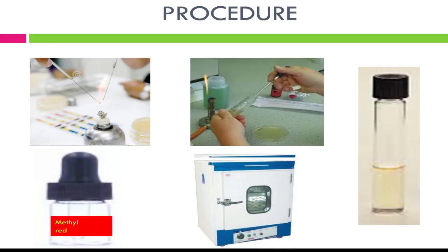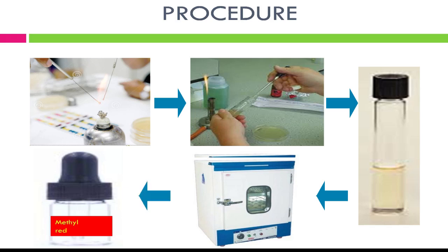Procedure of the Methyl Red test: sterilize the inoculating loop by flaming on a spirit lamp, then dip it into the bacterial suspension and inoculate into the MRVP broth — or use a dropper to dispense a few drops of bacterial suspension into the broth. Incubate at 37°C for 18 to 24 hours, then add two to three drops of methyl red indicator to the culture and observe for color change.